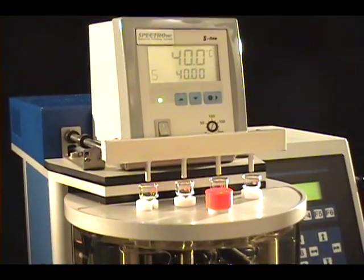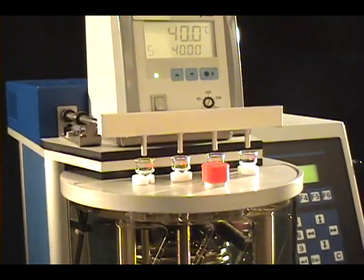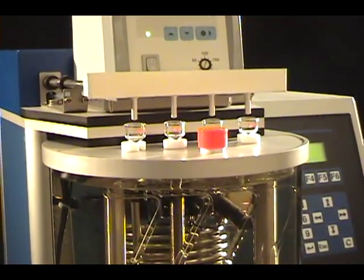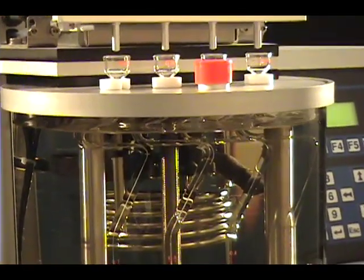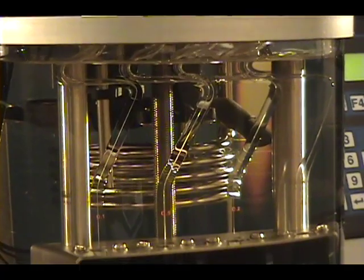The 7.5 liter thermostatic bath can operate from 20 to 110 degrees Celsius and can heat up from 40 to 100 degrees in less than 30 minutes. The bath comes with an integrated cooling spiral in case additional cooling is required.